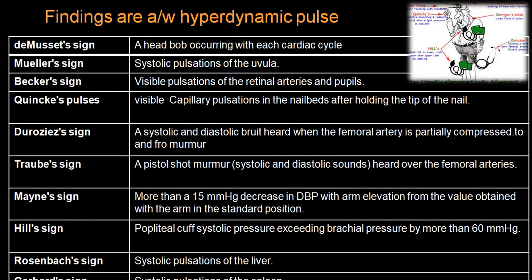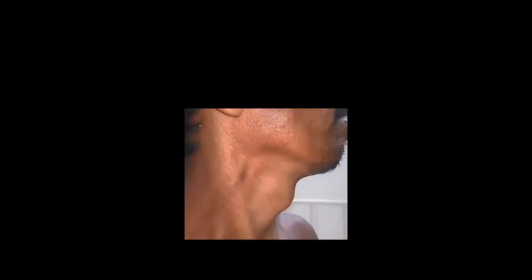The signs include: Muller, Baker, Quincke's, Duroziez's sign, Traube's sign, Mayne's sign, Hill's sign, Rosenbach, Gerald's sign, etc.